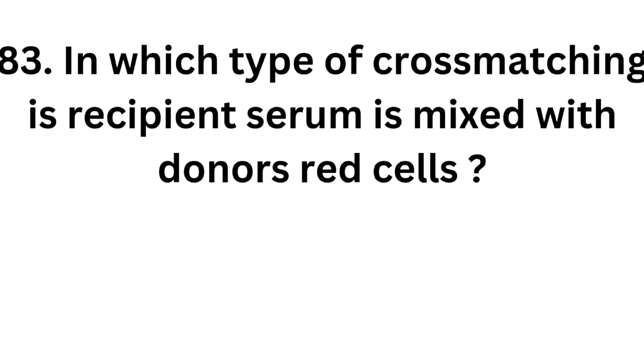Question number 83: In which type of cross-matching is recipient serum mixed with donor's red cells? The correct answer is major cross-matching, also called direct cross-matching. In major cross-matching, recipient serum is mixed with donor's red cells.